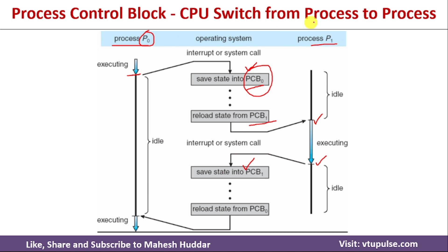This is how the CPU switch takes place from one process to another. Whenever a process moves from CPU to waiting state or ready state, it stores its information into its PCB, and whenever we want to execute that process again, we reload the PCB content and continue. In this video, I discussed what is the process control block, also known as the process task block, and how a CPU switch takes place from process to process. If you like the video, please like and share with your friends, press the subscribe button for more videos, and press the bell icon for regular updates. Thank you for watching.